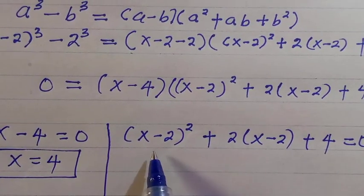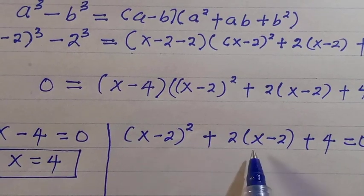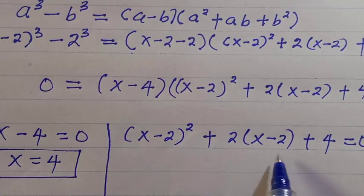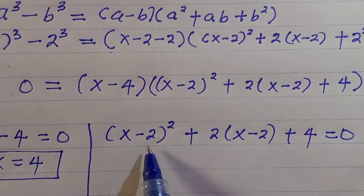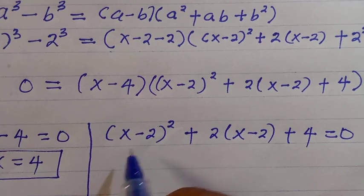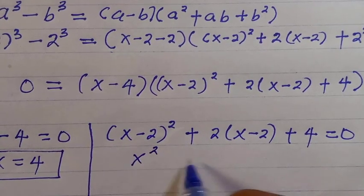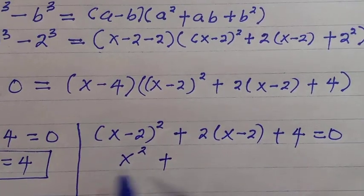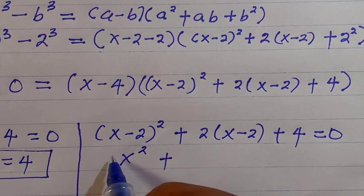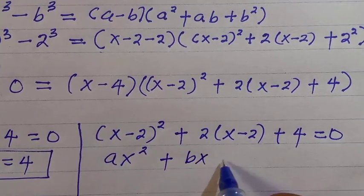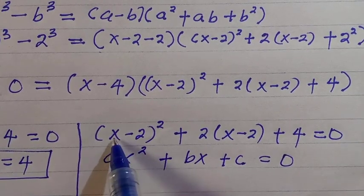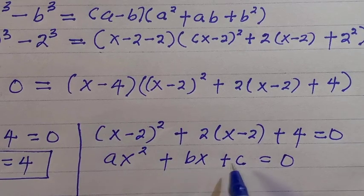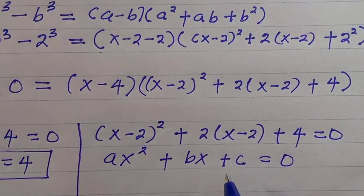We try to expand and do discriminant analysis but let's use a substitution. Comparing with ax squared plus bx plus c equals 0, if we let our variable be x minus 2, we can apply the quadratic formula to solve this second factor.